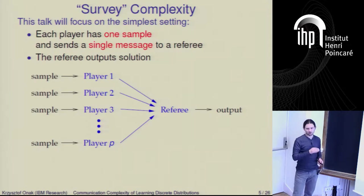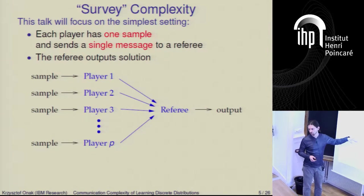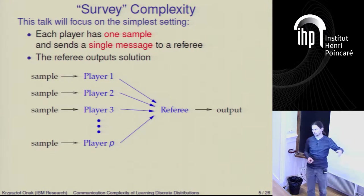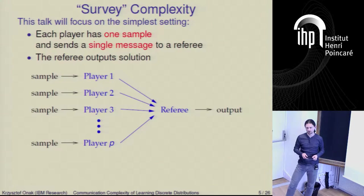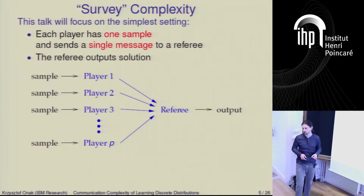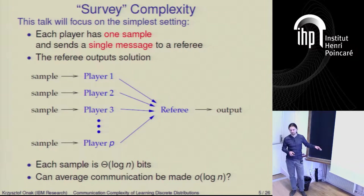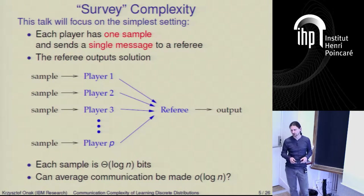The question becomes: how much do they have to communicate in order to solve a specific problem? Is sublinear communication possible? I'm going to keep it very basic and look at the simplest case: each player receives one sample. Then each player sends a single message to some extra player called the referee, and this referee, based on what she saw, wants to output a distribution that approximates the distribution from which the samples came. Each sample has log n bits, so the natural question is: can the average communication be made less than log n?